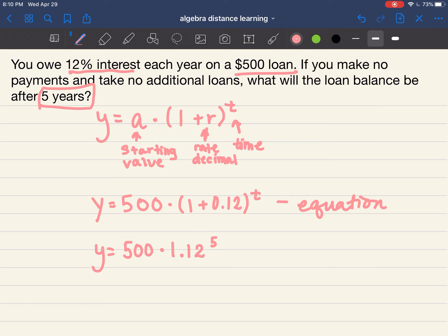So now what I would do, I would take my calculator, and I would first do what? Let's think about order of operations. What would the first thing I would do be? I agree, my exponent. So I'm going to do 1.12 raised to the 5th power.